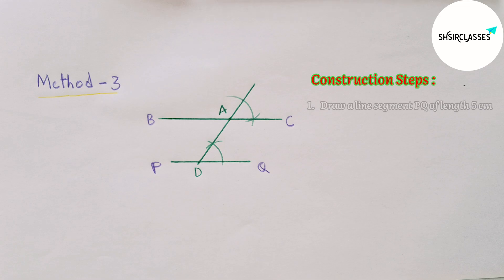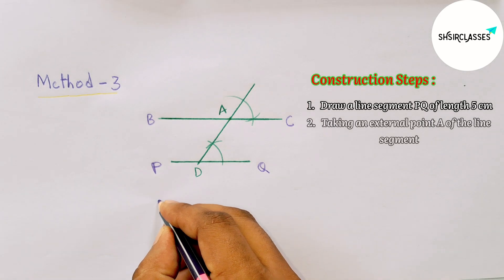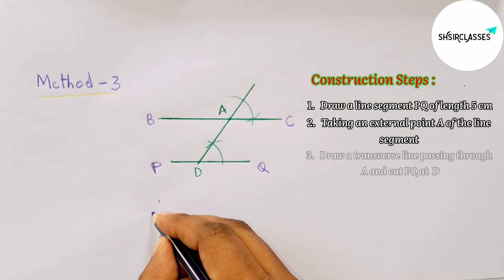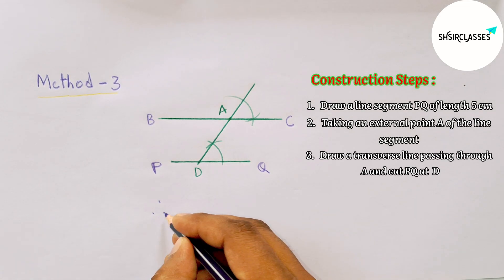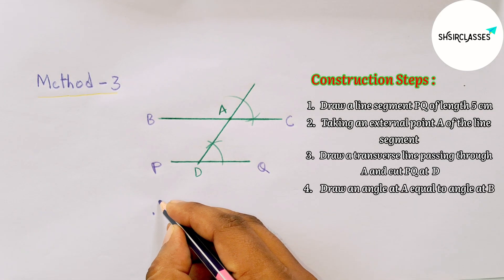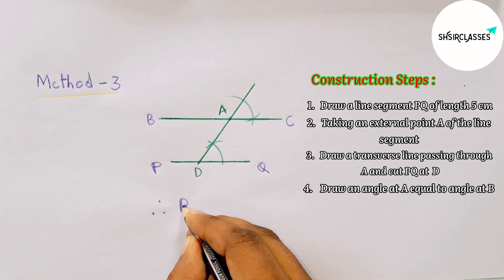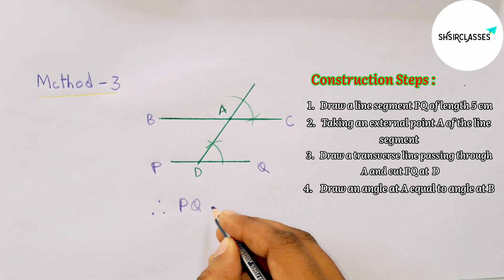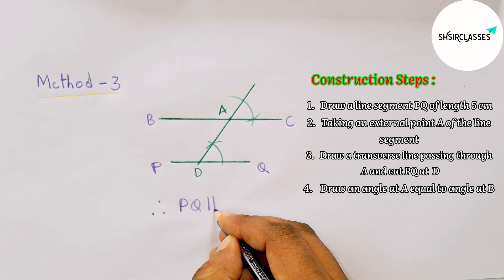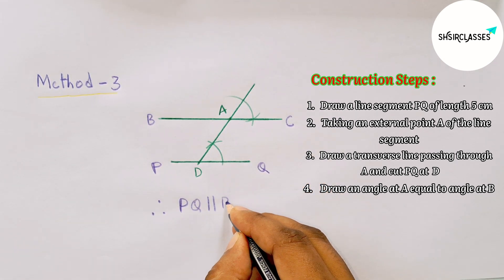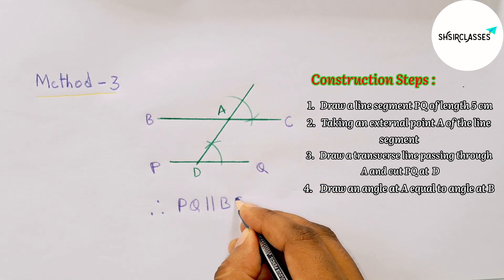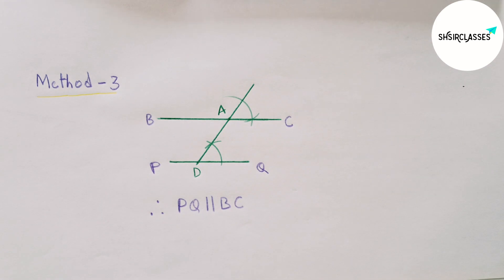You will get all the construction steps here. Therefore PQ is parallel with BC. By this way you can draw a parallel line. That's all, thanks for watching.